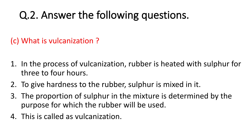Third question: what is vulcanization? In the process of vulcanization, rubber is heated with sulfur for 3 to 4 hours at a high temperature. Sulfur is mixed into rubber to give it hardness, and the proportion of sulfur in the mixture is determined for the purpose for which the rubber will be used. This process is called vulcanization. In short, mixing sulfur with the natural substance and heating it for 3 to 4 hours is the process of vulcanization, used for the hardening of rubber.